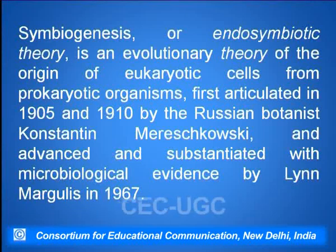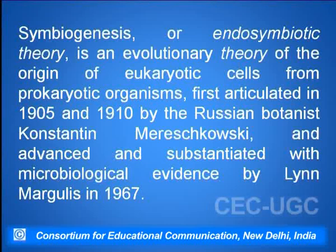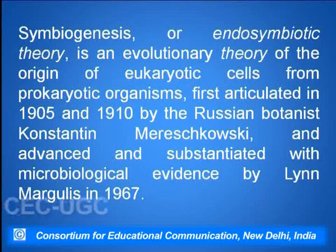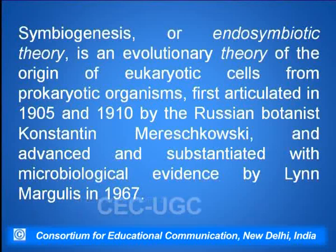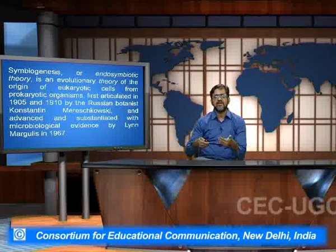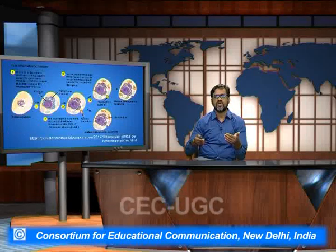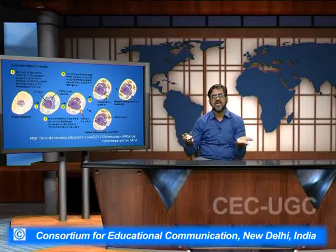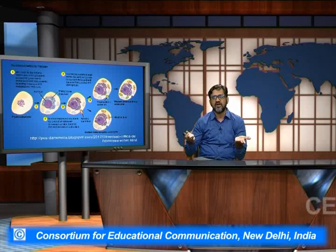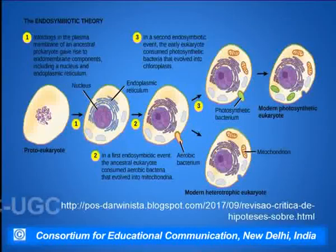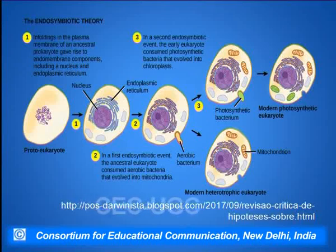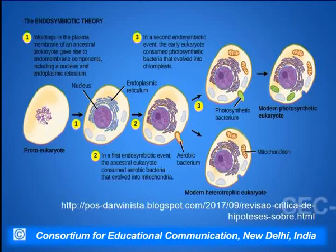The endosymbiotic theory explains how exactly the mitochondria and chloroplast came into existence and have many of the DNA and other structural entities coming from the prokaryotic organism. This shows the complete endosymbiotic theory — how exactly a prokaryotic cell was engulfed and subsequently became the mitochondria or chloroplast within the eukaryotic cells.